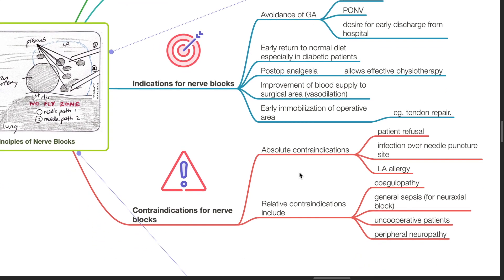Contraindications for nerve blocks include absolute and relative contraindications. Absolute contraindications are patient refusal, infection over needle puncture site, and local anesthetic allergy. Relative contraindications include coagulopathy, general sepsis for neuraxial block, uncooperative patients, and peripheral neuropathy.